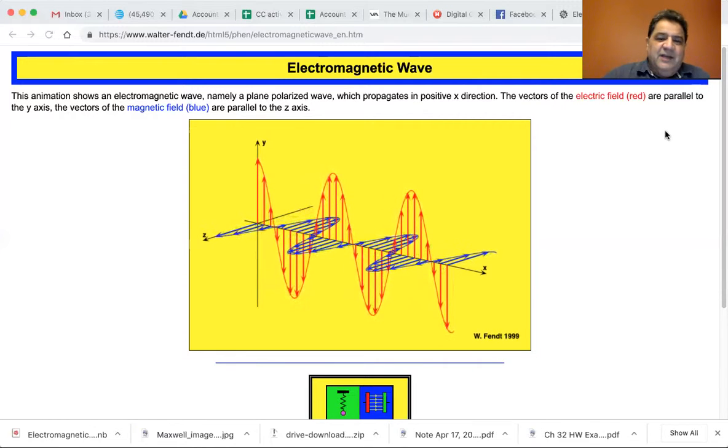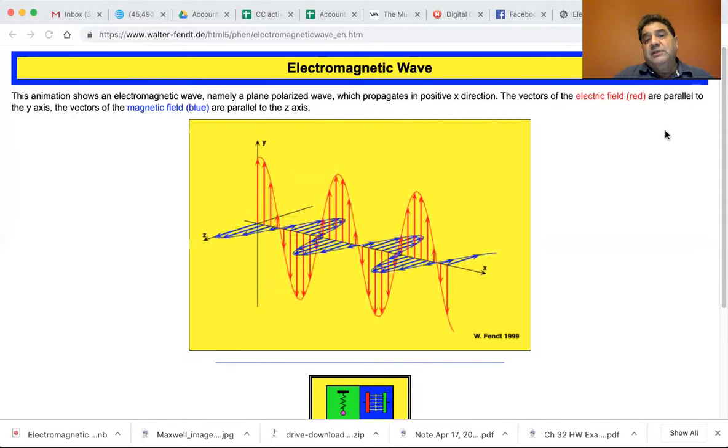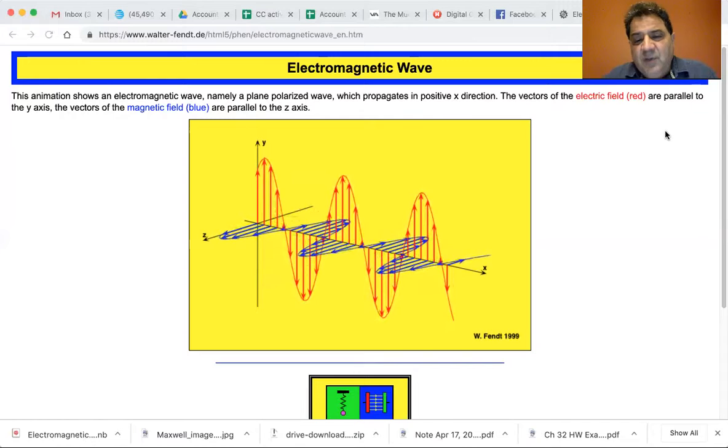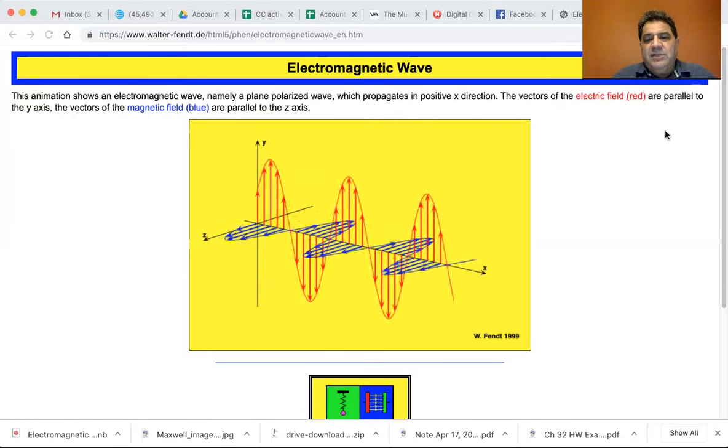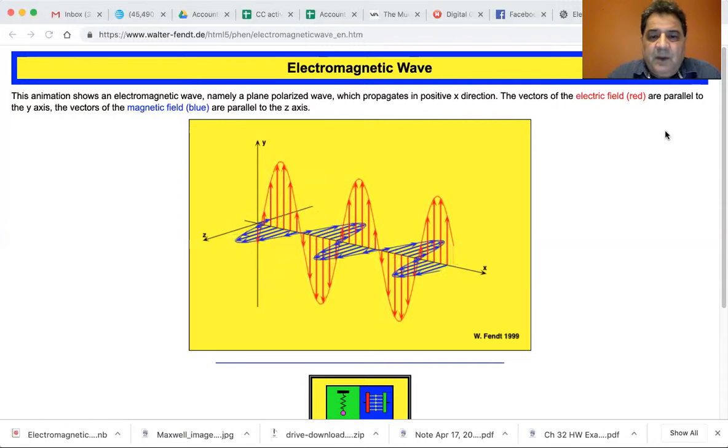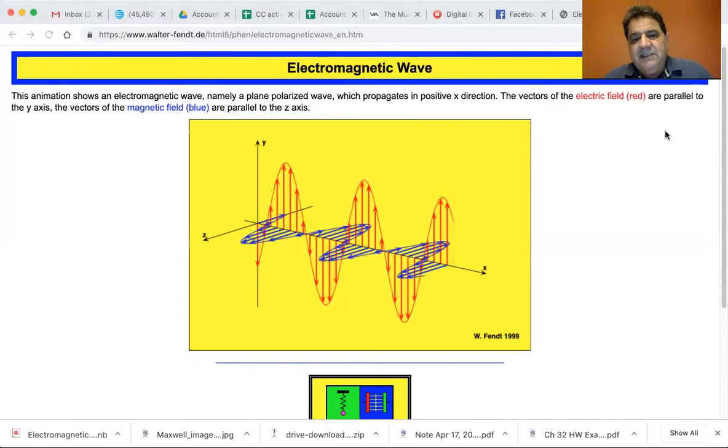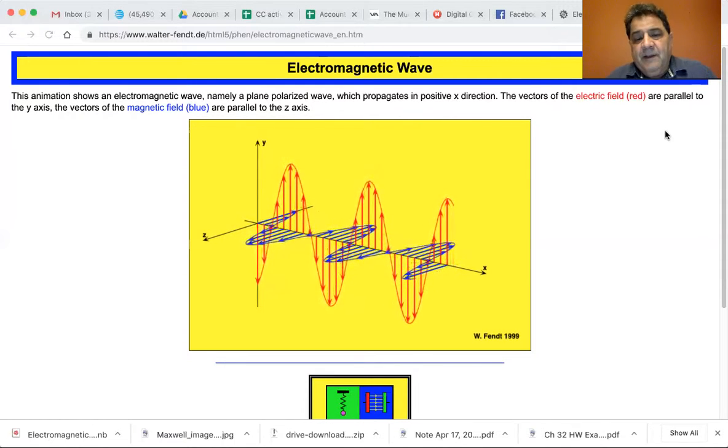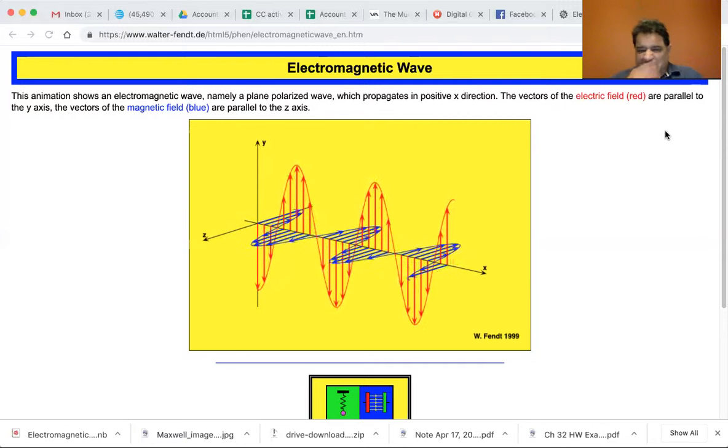When red is negative in the negative Y direction, blue is negative in the negative Z direction. But you can see that whenever red is Y positive, blue is Z positive. And so they're in phase.